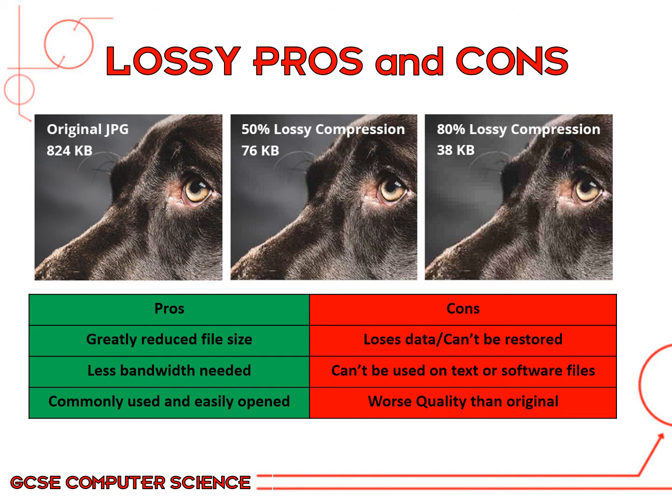This type of compression can't be used on text or software files. You can't get rid of data from a Word document — you're going to notice if words are missing, so you can't just remove random data. Another advantage is that lossy compression is commonly used and easily opened. When you save a JPEG image, anybody can open it — it's really common and anyone can see what you've done.